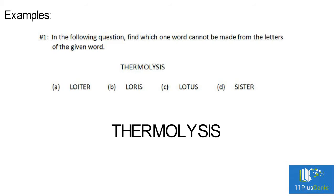If we take each word letter by letter, we see that A. L-O-I-T-E-R are contained in the word, so loiter can be formed. B. L-O-R-I-S are contained in the word, so loris can be formed.